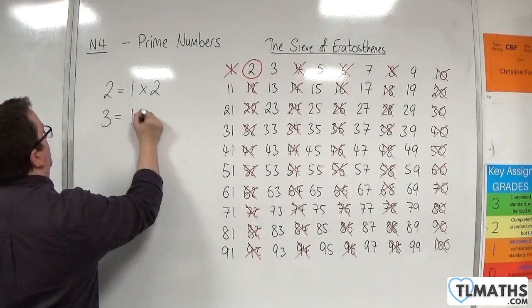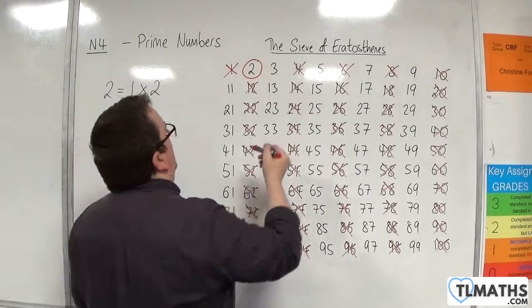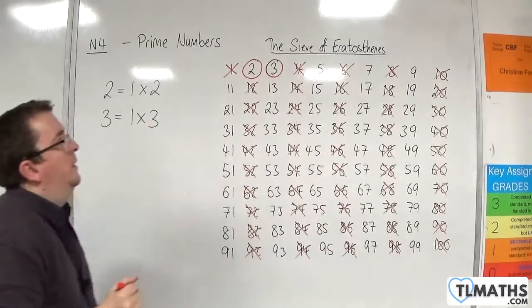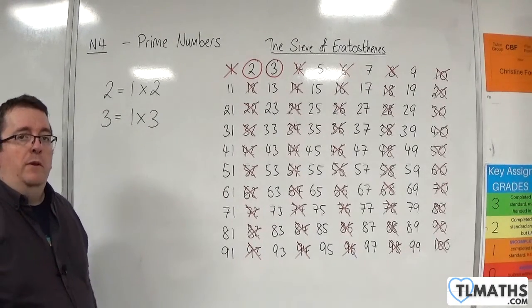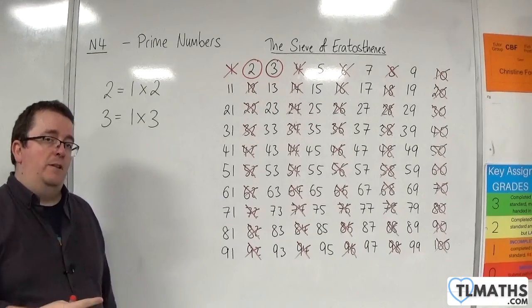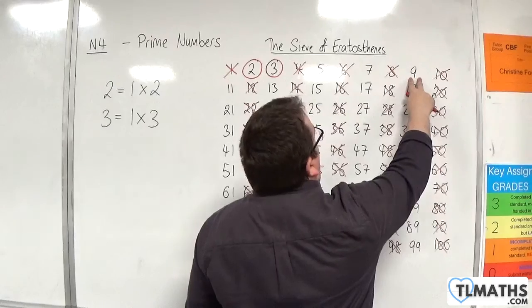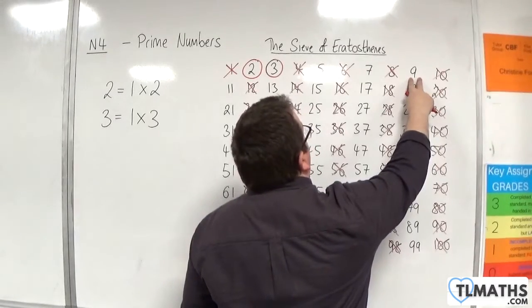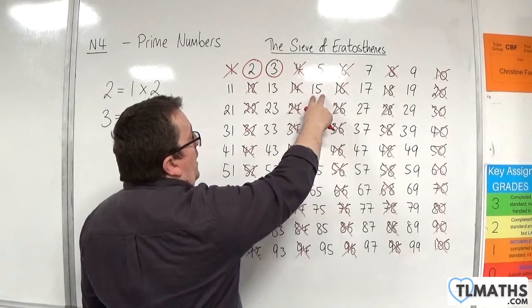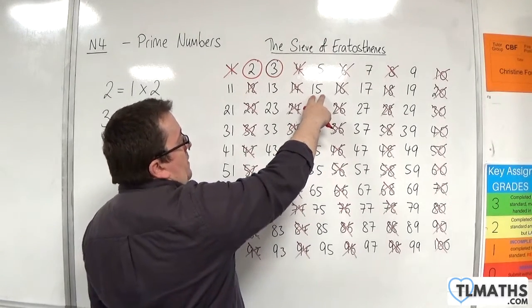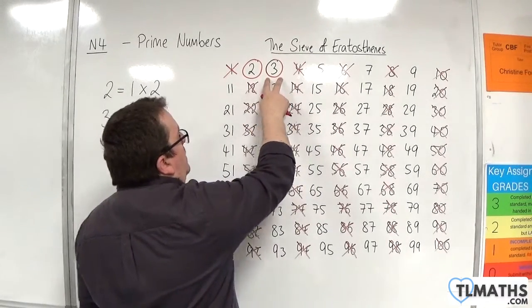But then any multiple of three must therefore not be a prime number because nine will have one and nine as factors but also three. Fifteen will have one and fifteen as factors but also three.